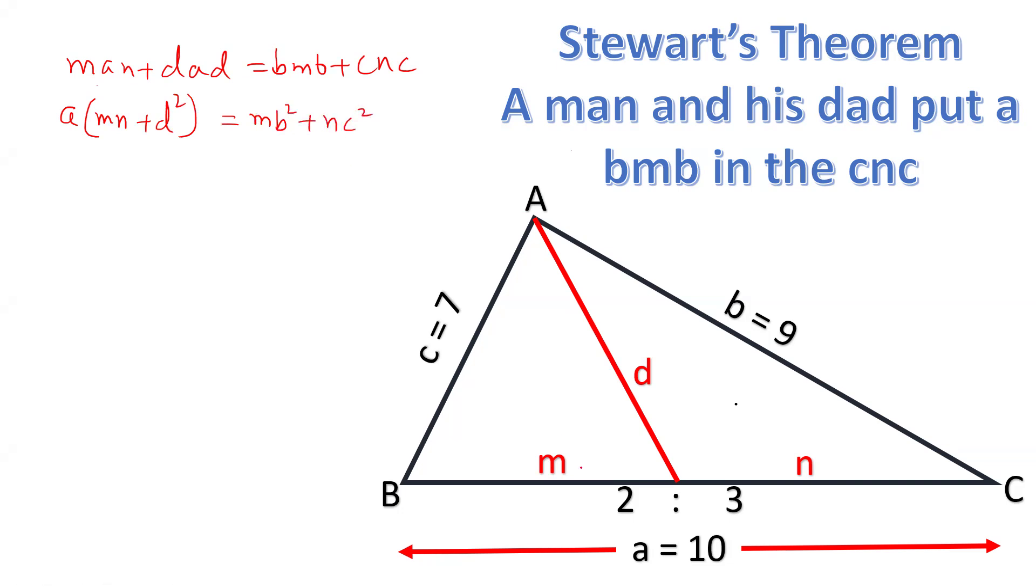Now M and N are actual values, so first of all we have to calculate the value. MN is given that the ratio is 2 is to 3. So we can take this as 2x and 3x equals 10. 5x equals 10, so x equals 2.